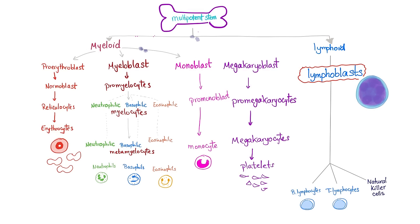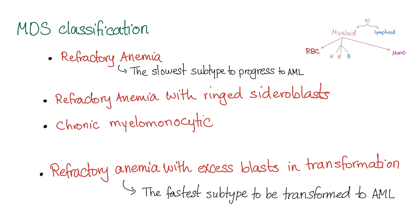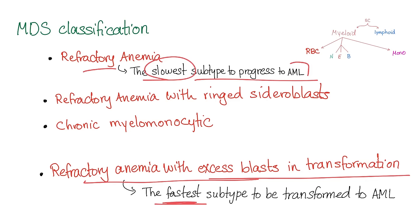Our famous slide of hematopoiesis — this is the myeloid lineage. MDS affects all of this: you end up with anemia, leukopenia, thrombocytopenia. Classification of MDS: refractory anemia; refractory anemia with ringed sideroblasts; chronic myelomonocytic leukemia; or refractory anemia with excess blasts in transformation. Refractory anemia is the slowest subtype to progress to AML, while refractory anemia with excess blasts in transformation is the fastest.